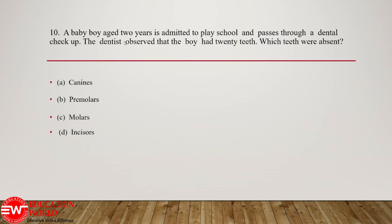Question number 10: a baby boy aged 2 years is admitted to play school and passes through a dental checkup. The dentist observed that the boy had 20 teeth — which teeth were absent? In case of children, premolar teeth are absent. Hence the correct option is B, premolars. Children have the dental formula 2, 1, 0, 2 / 2, 1, 0, 2 × 2 — they do not have premolar teeth in their dental set.